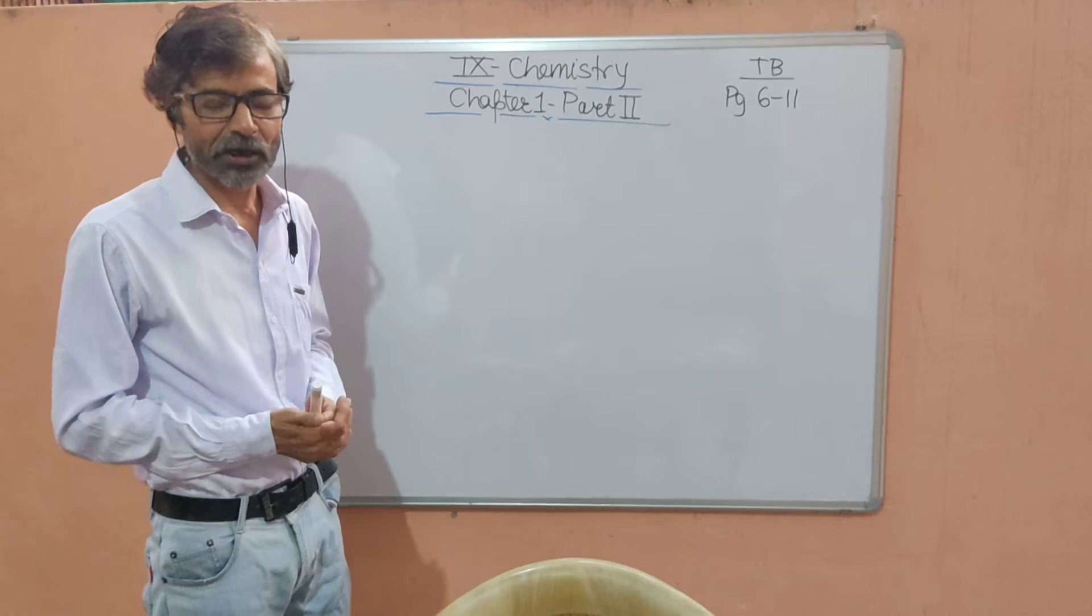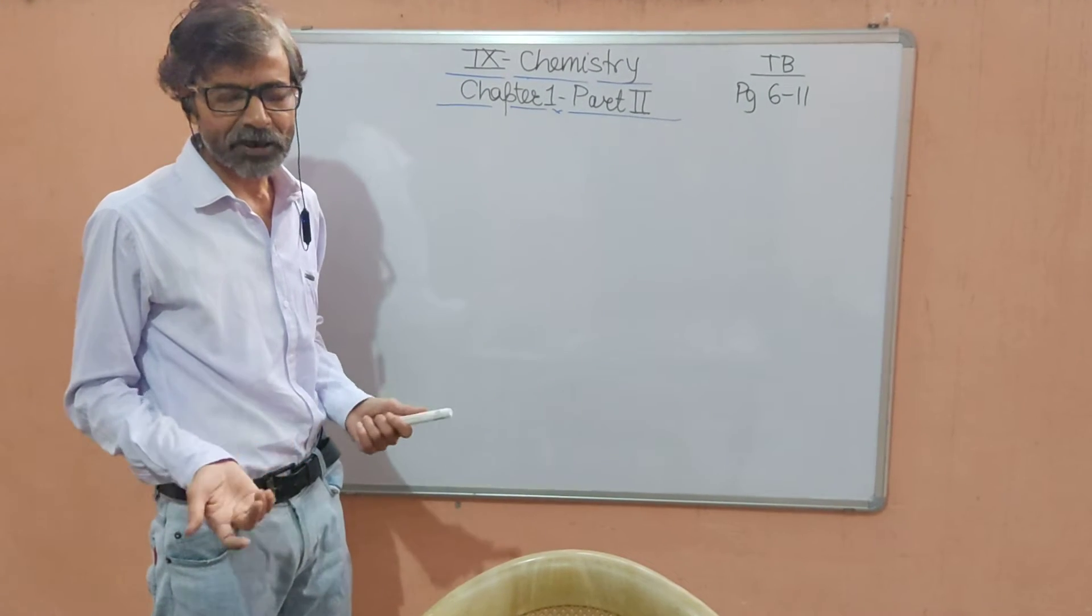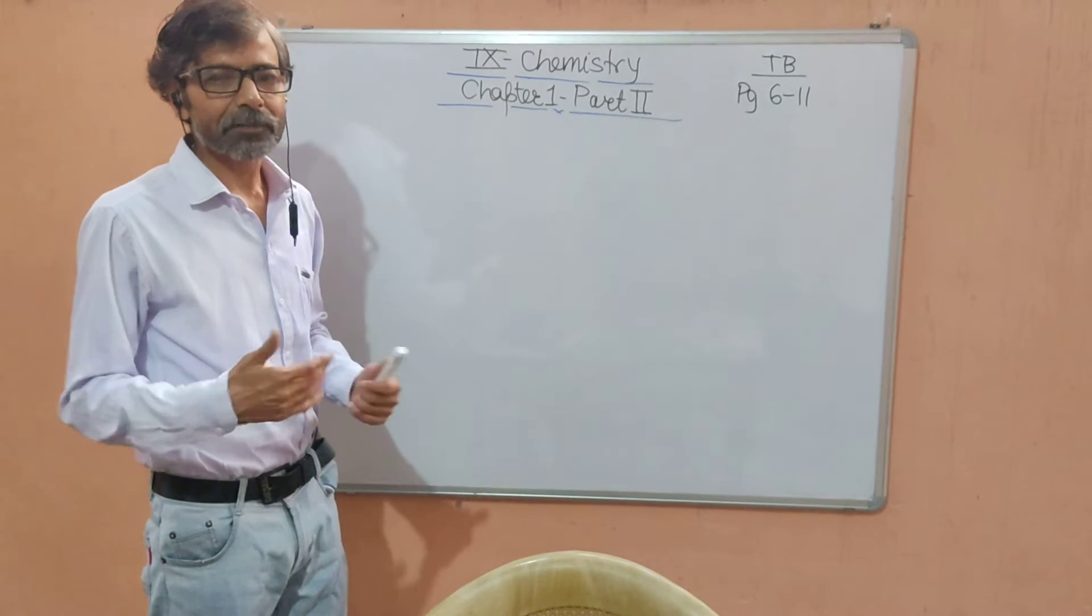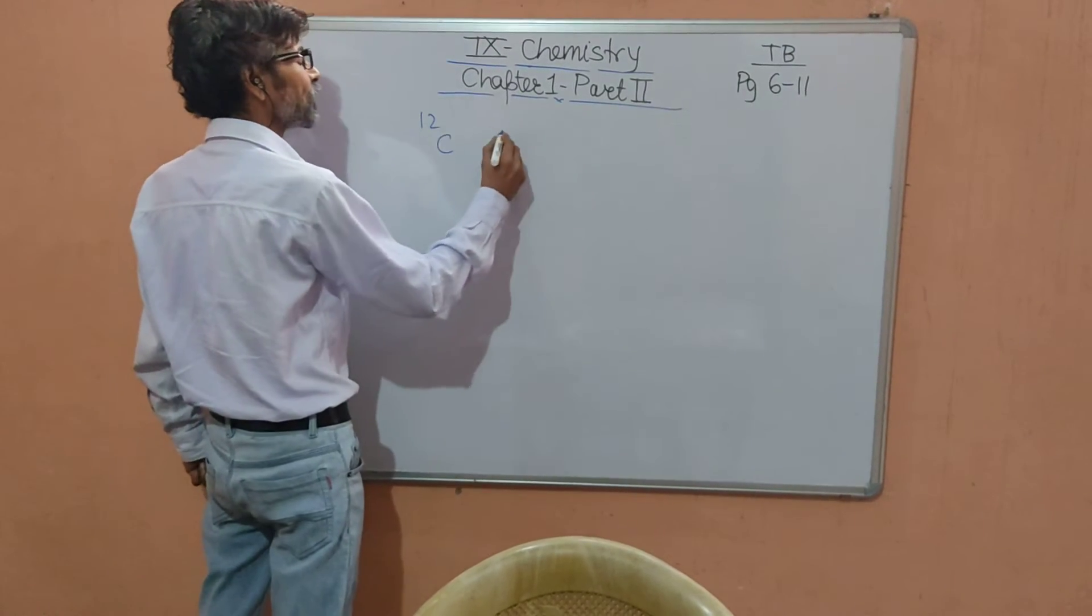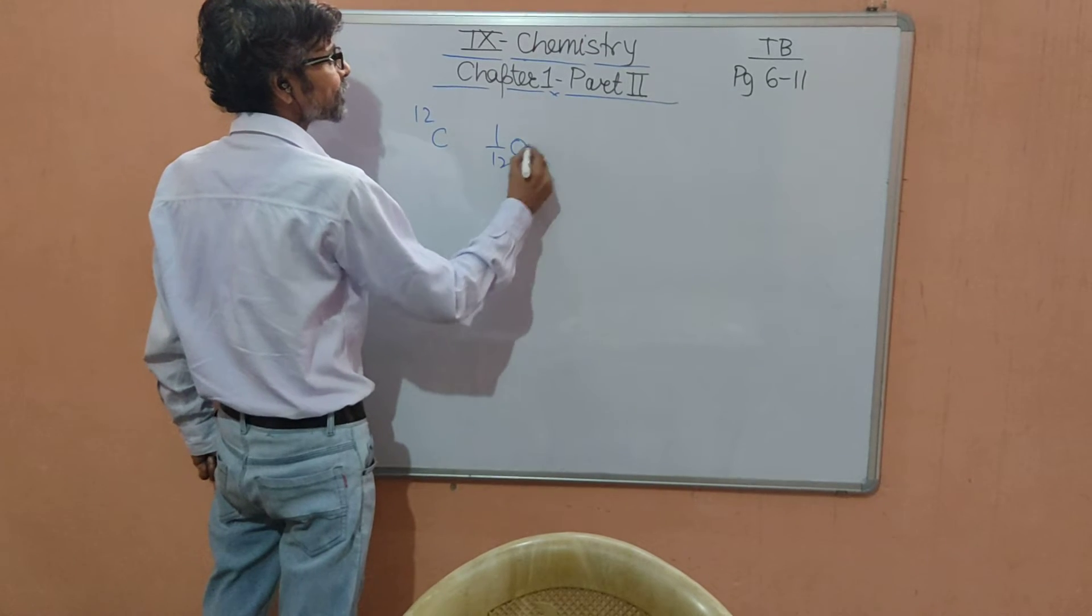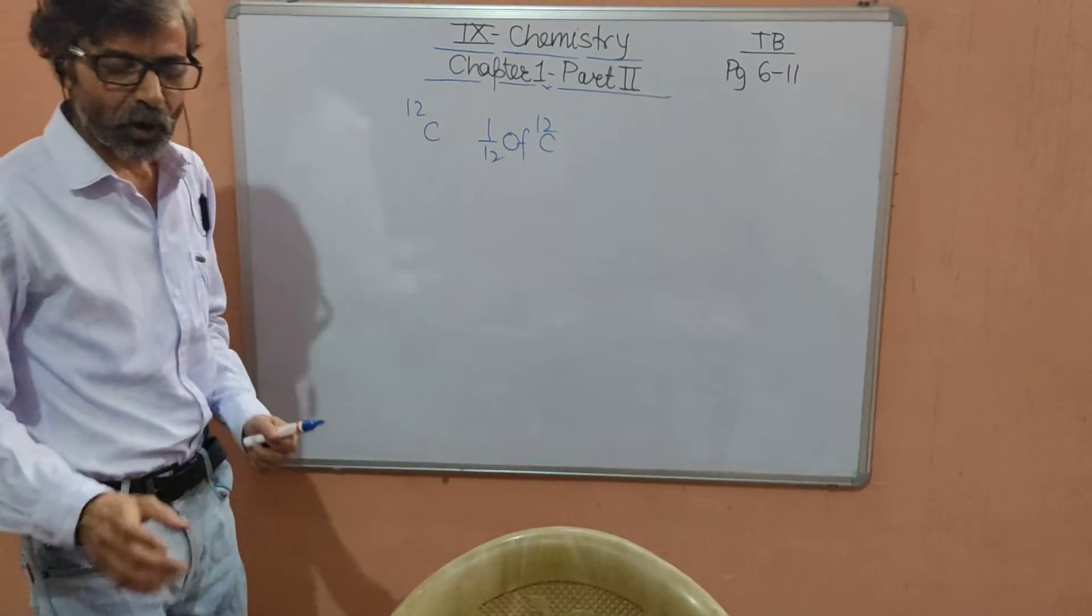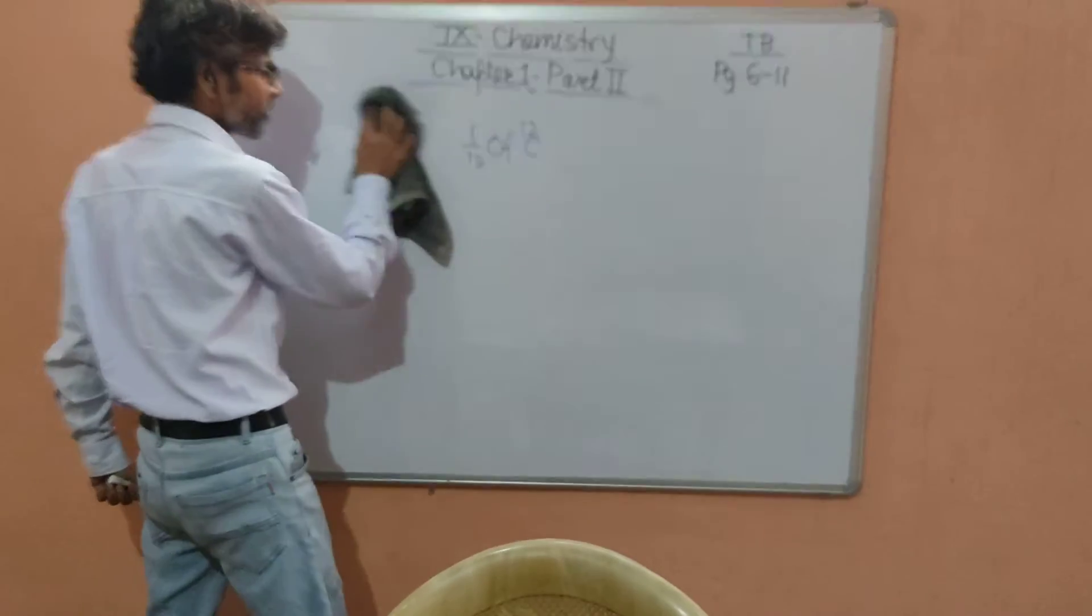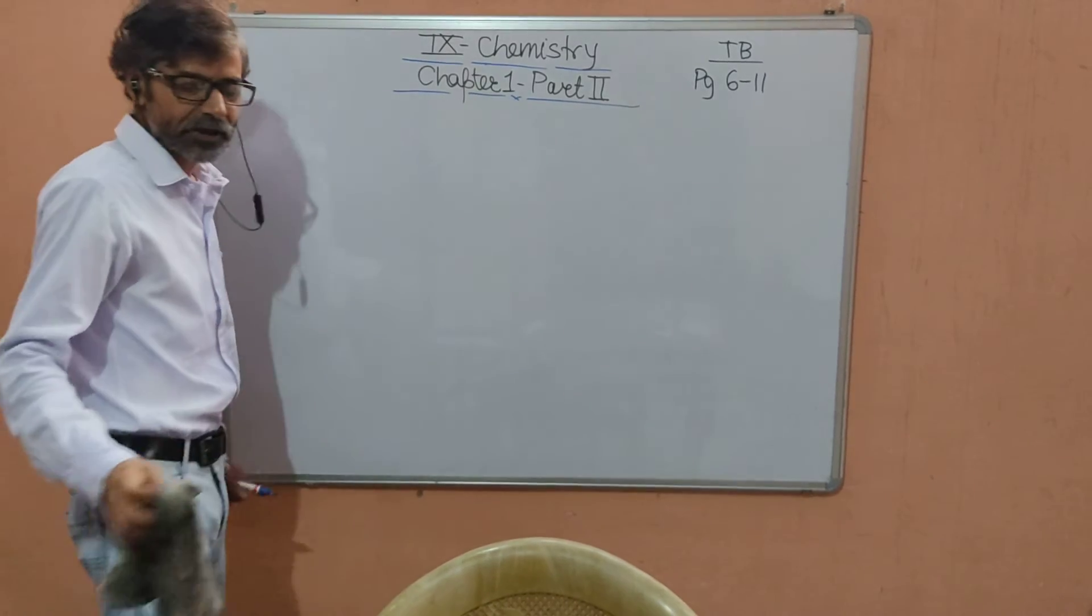So we take the relative atomic mass. We take the mass of the hydrogen atom as one and compare it with the other elements' mass, or we can take carbon as 12 and compare it to one-twelfth of carbon atom mass. And in that way we can get the relative atomic mass.